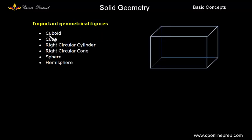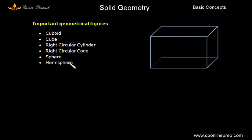The important figures are cuboid, cube, right circular cylinder, right circular cone, sphere and hemisphere. In schools we have learnt the formulas of volume, the surface area, and the total surface area of all these geometrical figures separately.